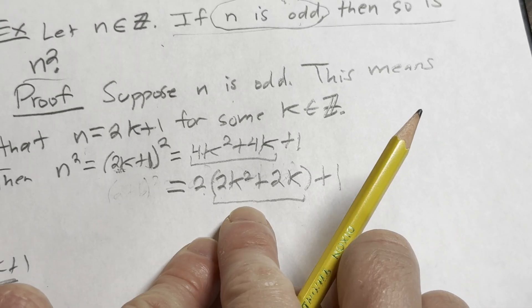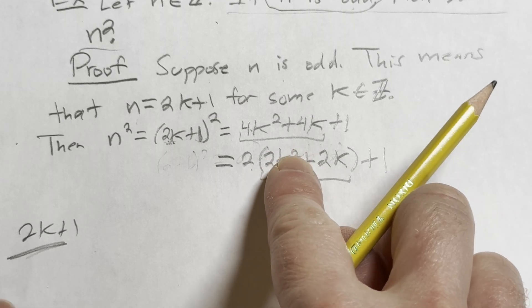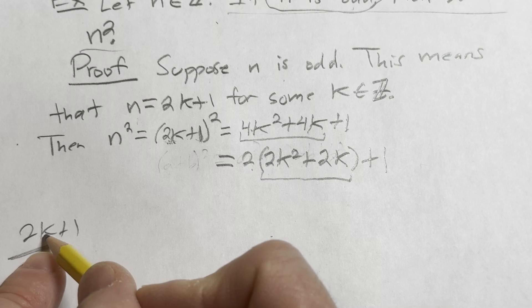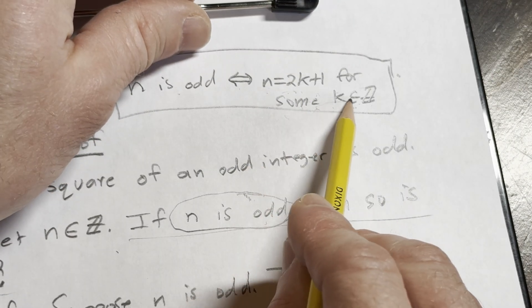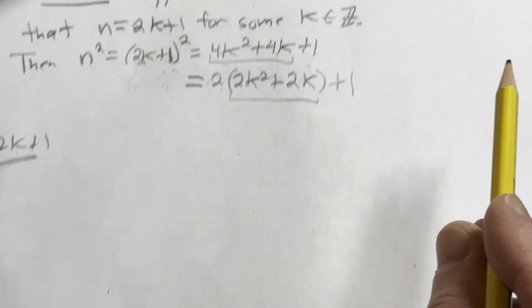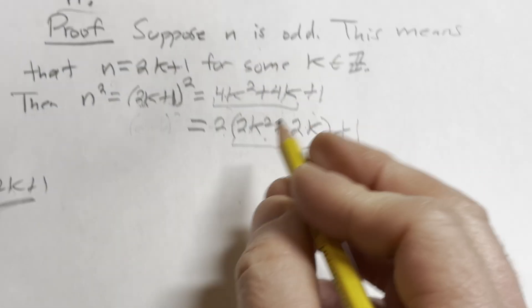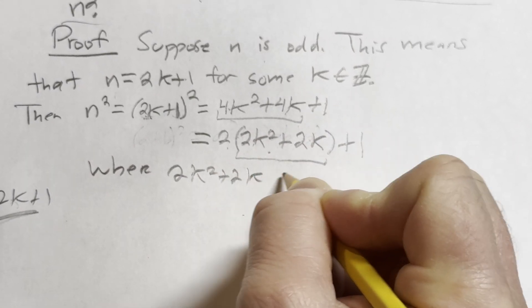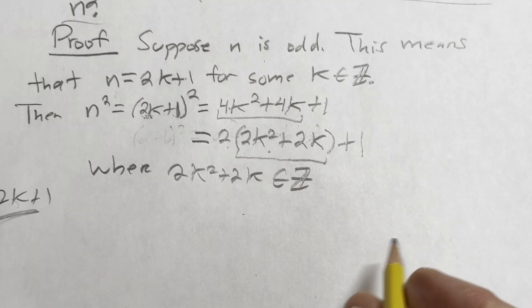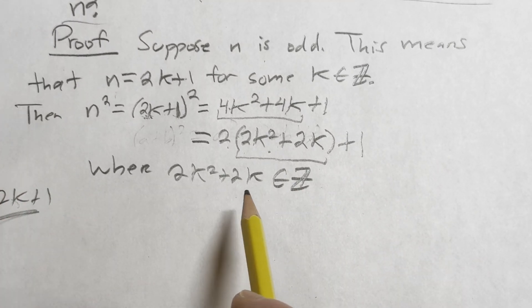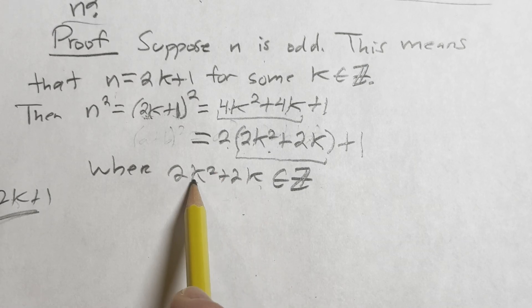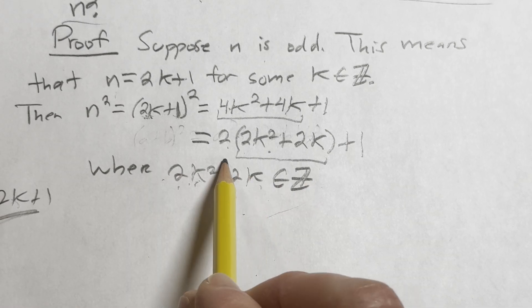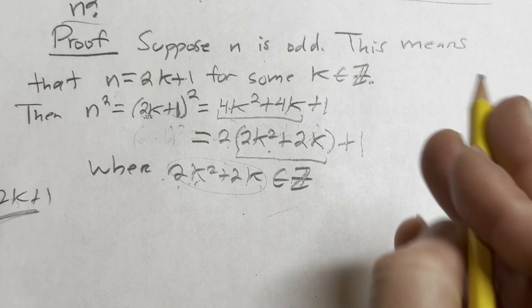So this is an integer. So we need to say that because this is our k. This whole thing. k is a dummy variable. We could have used, you can say, you can change the definition. You can use w. It doesn't matter. You can say n equals 2 times w plus 1 for some w in Z. It doesn't matter. It's a dummy variable. So you just have to indicate that this is an integer where 2k squared plus 2k is also an integer. Why? Because the integers are closed under multiplication and addition. So you take any two integers, you multiply them, you get an integer. Square an integer, you get an integer. 2 times an integer is an integer. An integer plus an integer is an integer. So closure guarantees that this bad boy lives inside this set.